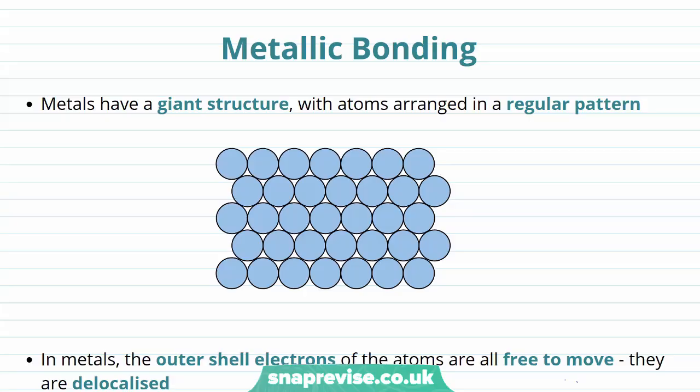Metals have what is known as a giant structure where the atoms are arranged into a regular pattern. If you've watched our video on giant ionic compounds or giant covalent molecules, you'll know that the word giant here means contains lots of atoms, with the exact number of atoms contained within a metal depending on how big the piece of metal is.